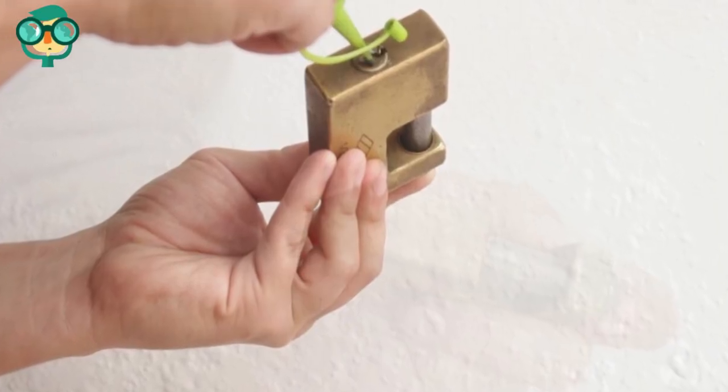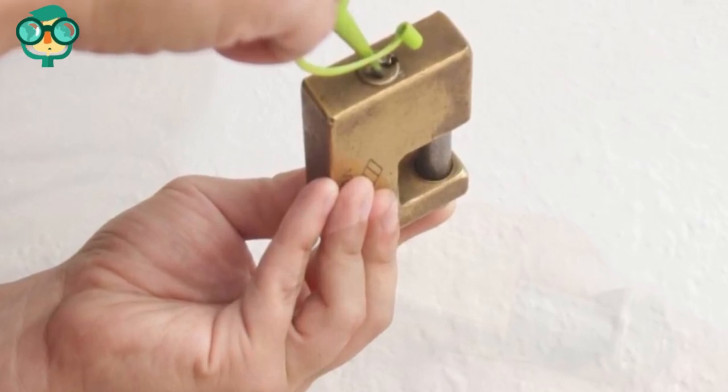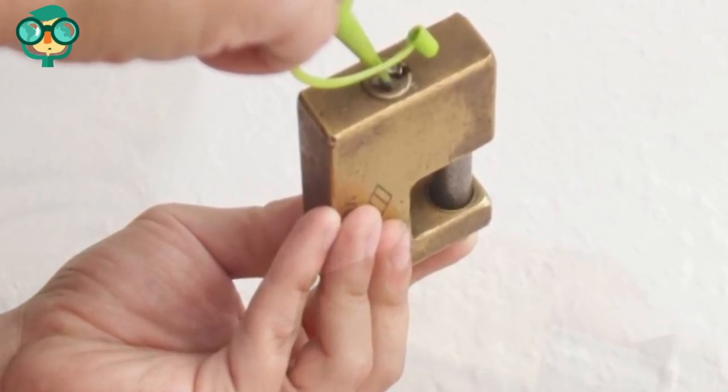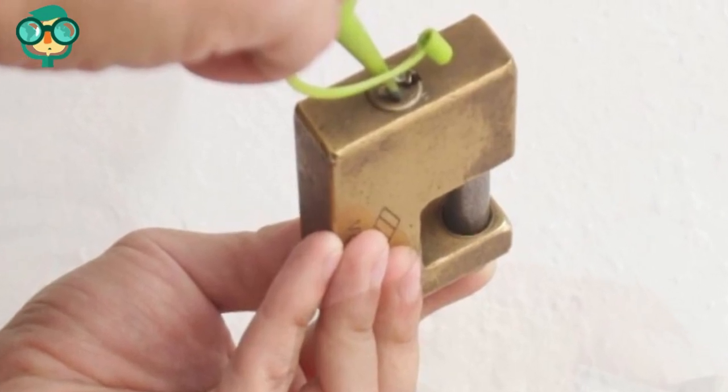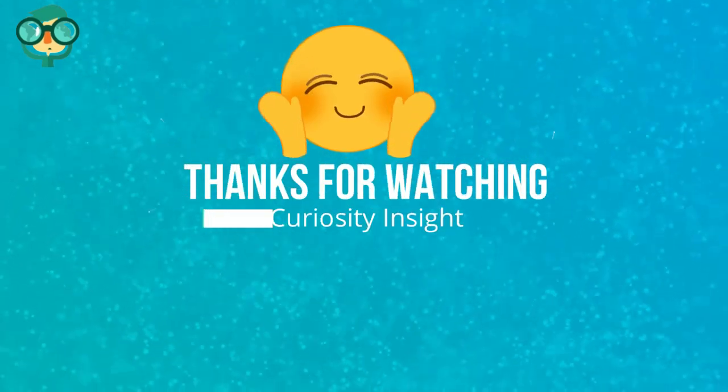Lube a padlock. Puff some graphite lubricant into the keyhole on the padlock. Insert a key and move it around to spread the graphite throughout the cylinder. Then, apply some oil to the shackle and shackle hole on the padlock. Thanks for watching this video.